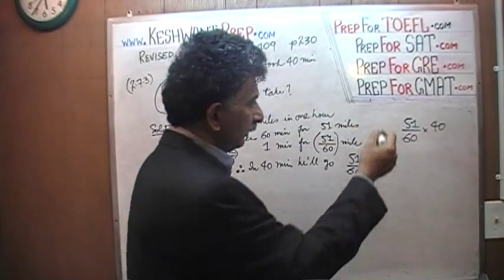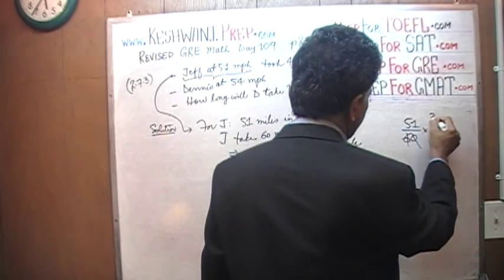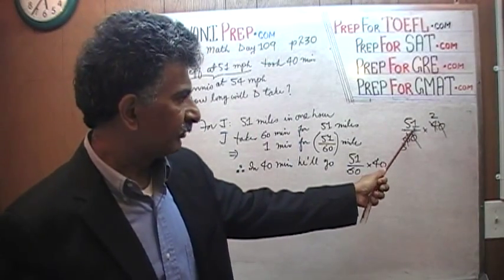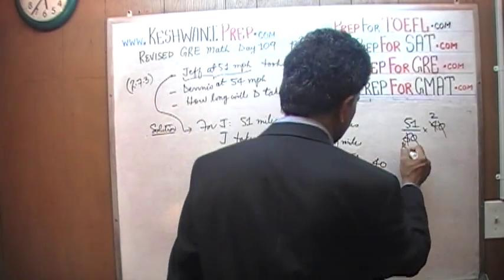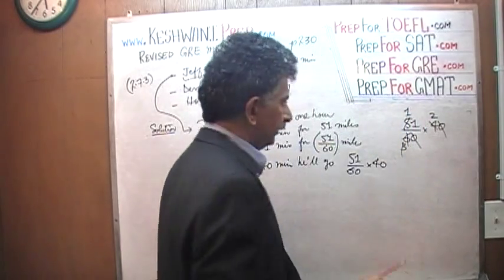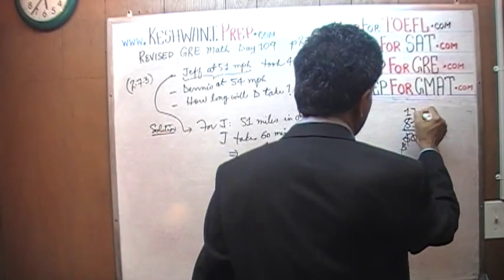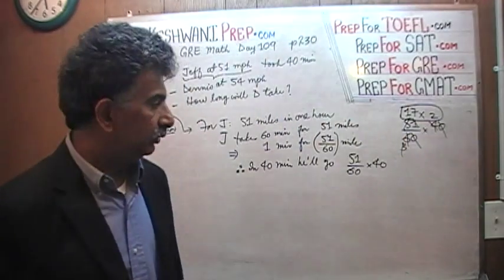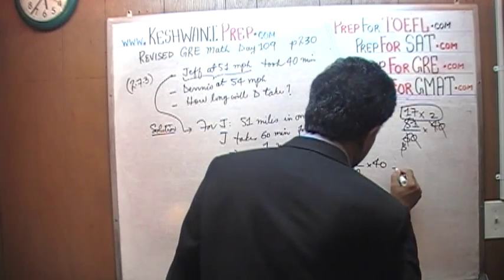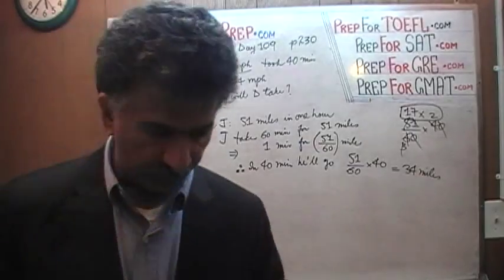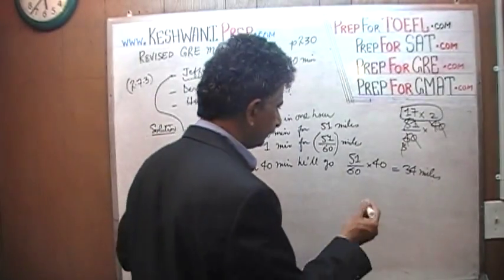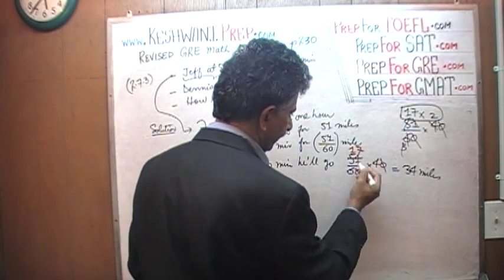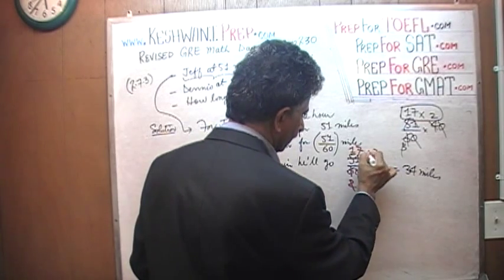51 over 60 times 40. Divide the top and bottom by 10 — we knock out the zeros. Divide top and bottom by 2: 4 becomes 2 and 6 becomes 3. Now, 51: the sum of its digits is 5 plus 1, which is 6, so 51 is divisible by 3. Let's knock out the 3s. How many 3s in 5? There is one 3 in 5. The remaining 2 joins the 1 and becomes 21, and there are 7 threes in 21. So 6 becomes 2, and 2 cancels with the 4, giving us 17 times 2, which is 34 miles. That's the total distance Jeff travels.